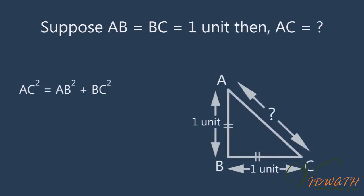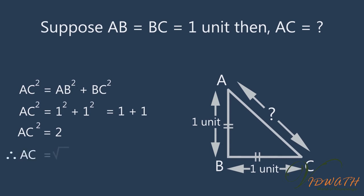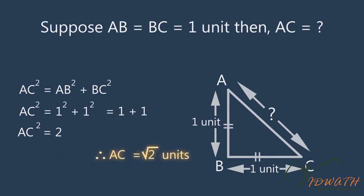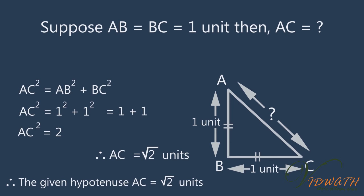Then we can find AC. We know that AC squared is equal to AB squared plus BC squared, by the Pythagoras theorem. Applying the values: AC squared is equal to 1 squared plus 1 squared, which is equal to 1 plus 1. Therefore, AC squared is equal to 2, and AC is equal to root 2 units. Hence, the hypotenuse AC is equal to root 2 units.